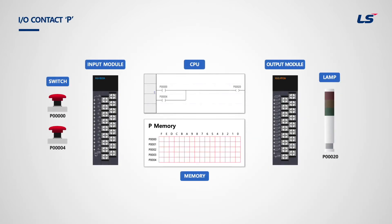Let's look at P memory. On the left there is an input module, and on the right there is an output module. If switches connected to P0 and P4 on the far left are activated, then input signals must come in. As seen in the ladder program, P0 and P4 are A contacts, and if either one of them has an input signal, then output signal P20 will be turned on. P memory is based on bit, so word P0 has 16 bits.